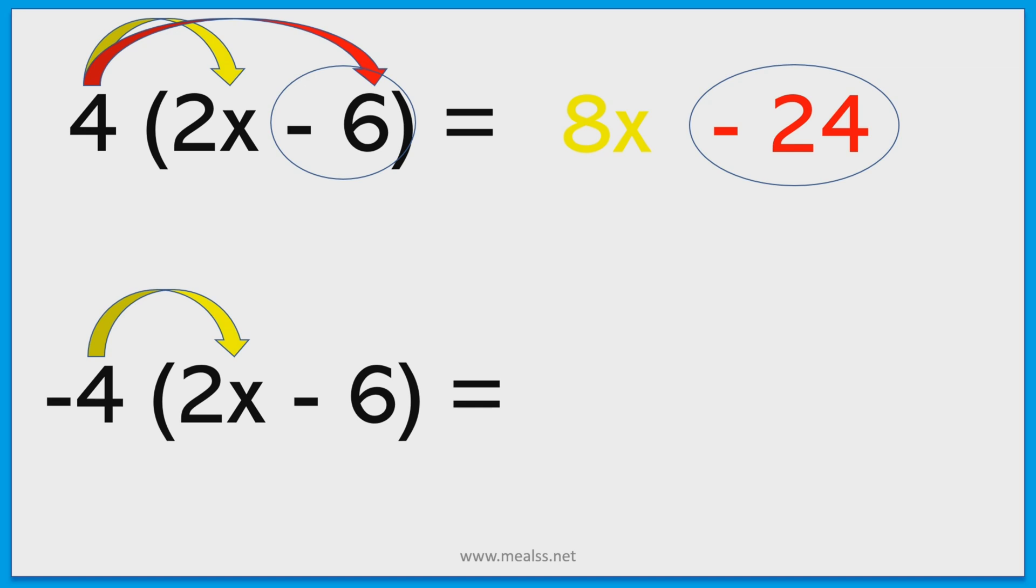A negative 4 multiplied by 2x is going to give us negative 8x. Negative 4 multiplied by negative 6 is going to give us a positive 24. Two negatives multiplied together give a positive answer.